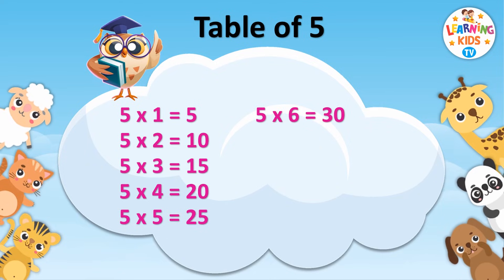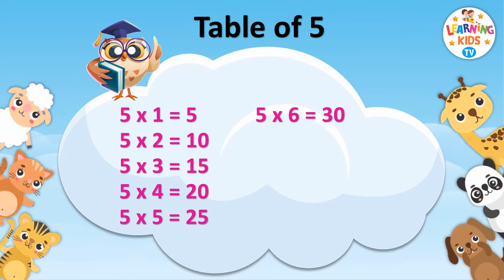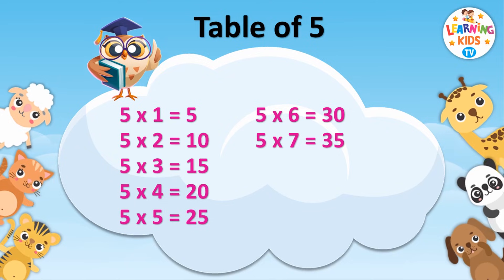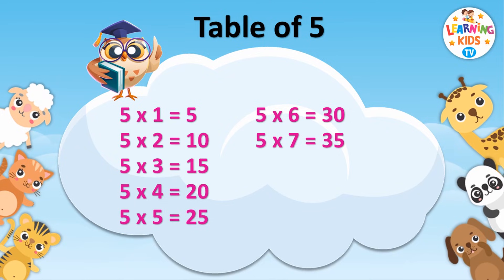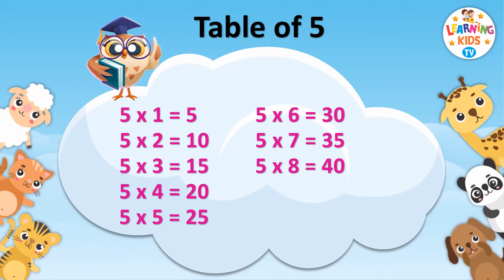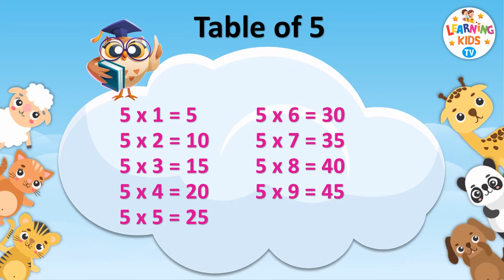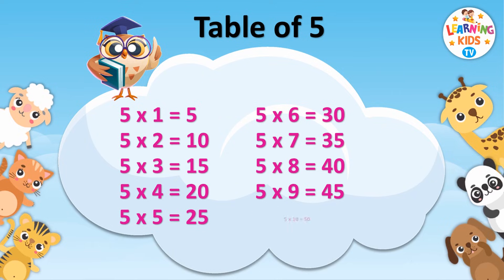Five sixes are thirty. Five sevens are thirty-five. Five eights are forty. Five nines are forty-five. Five tens are fifty.